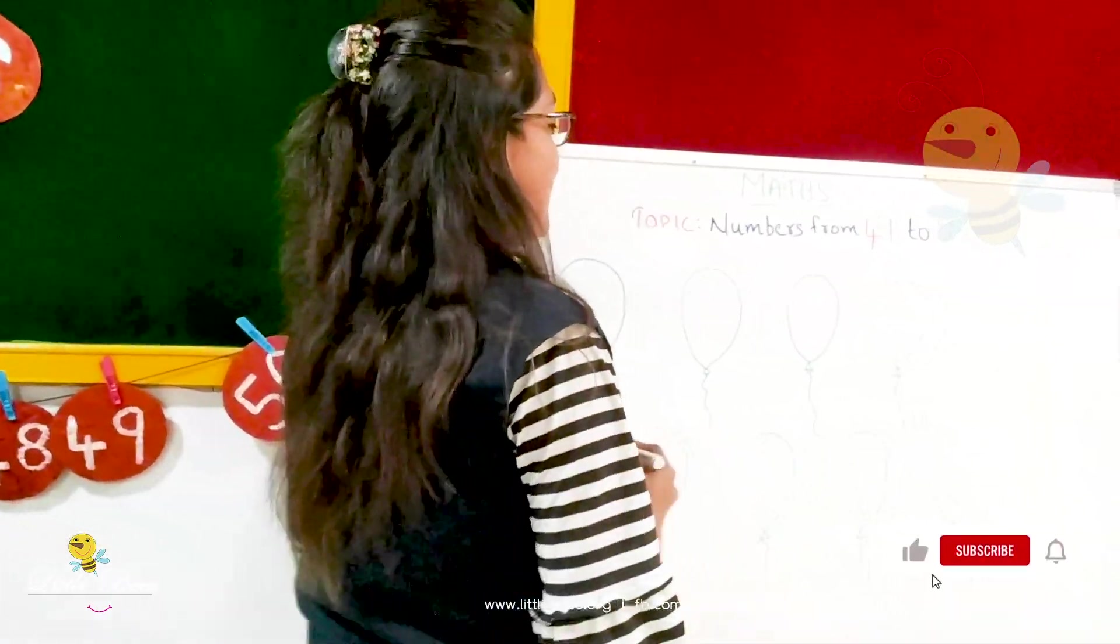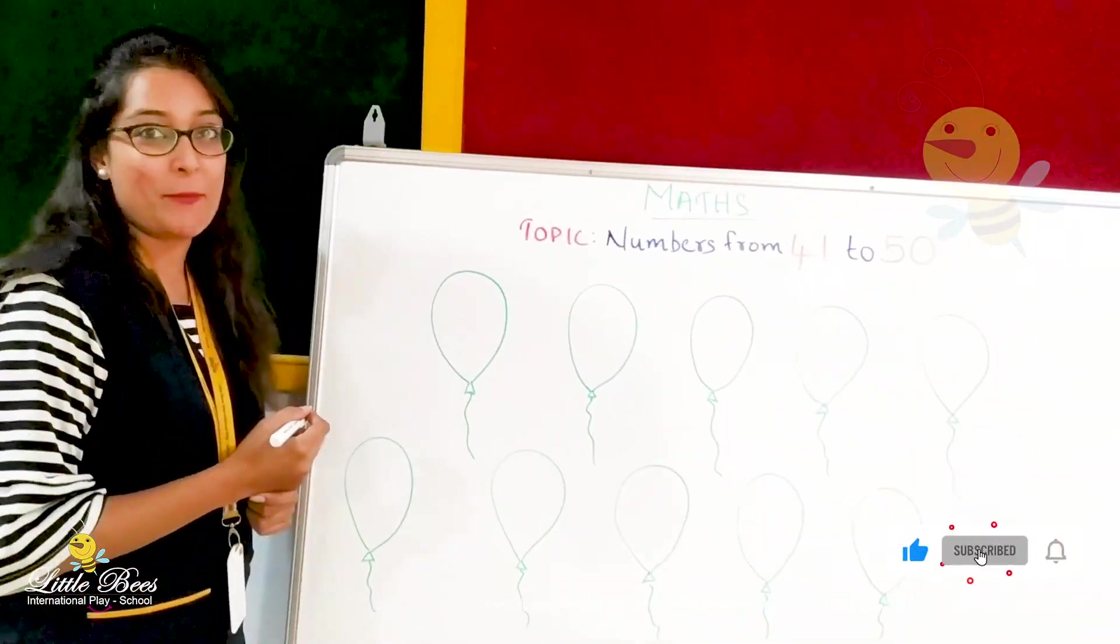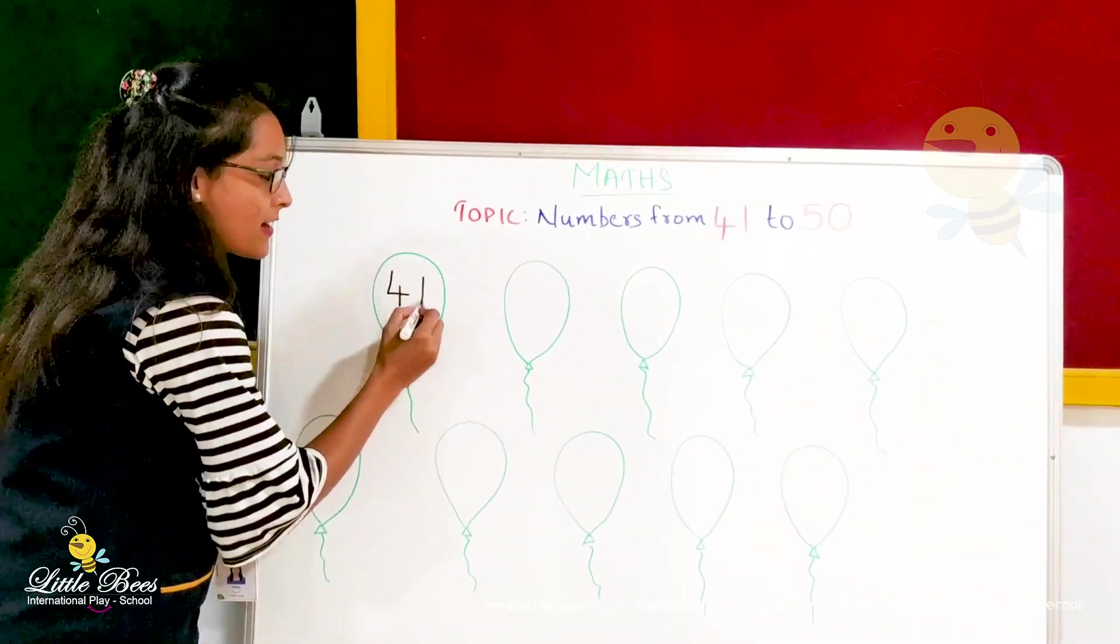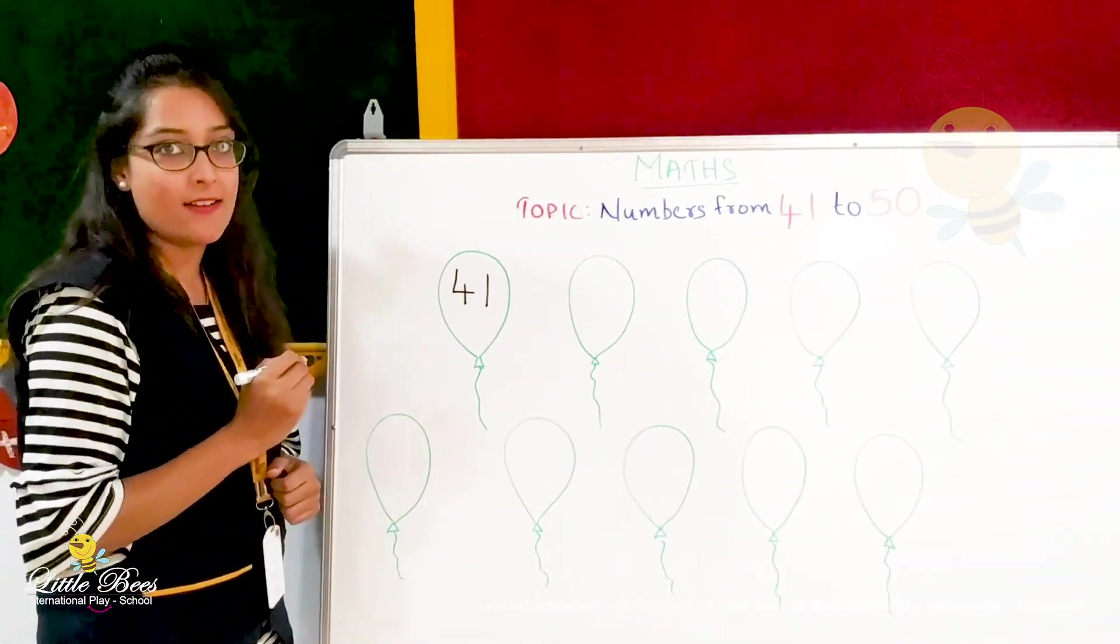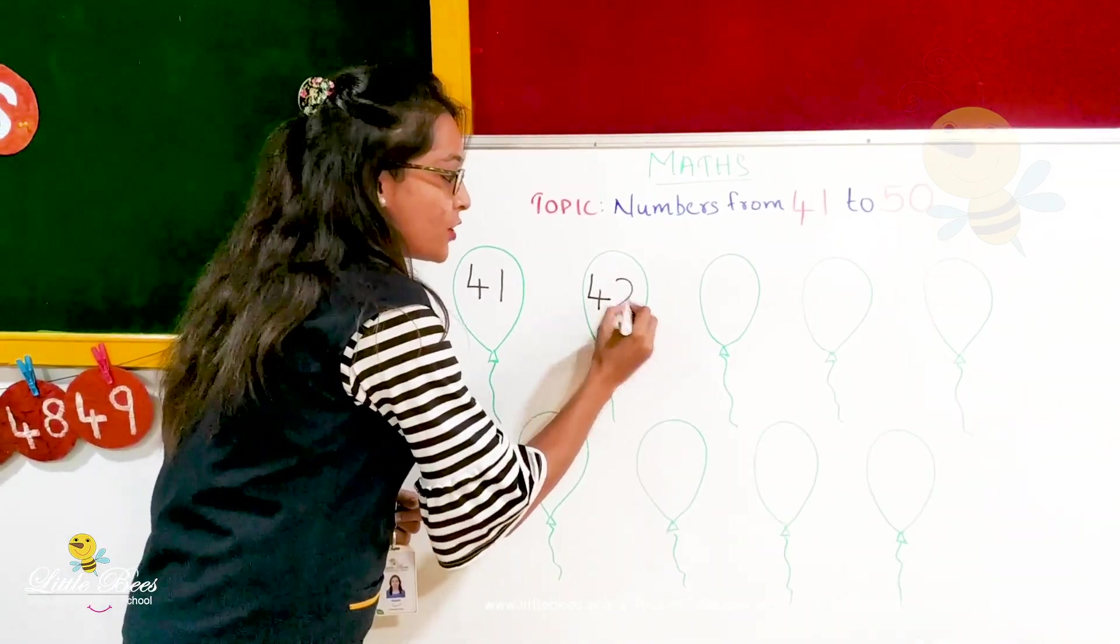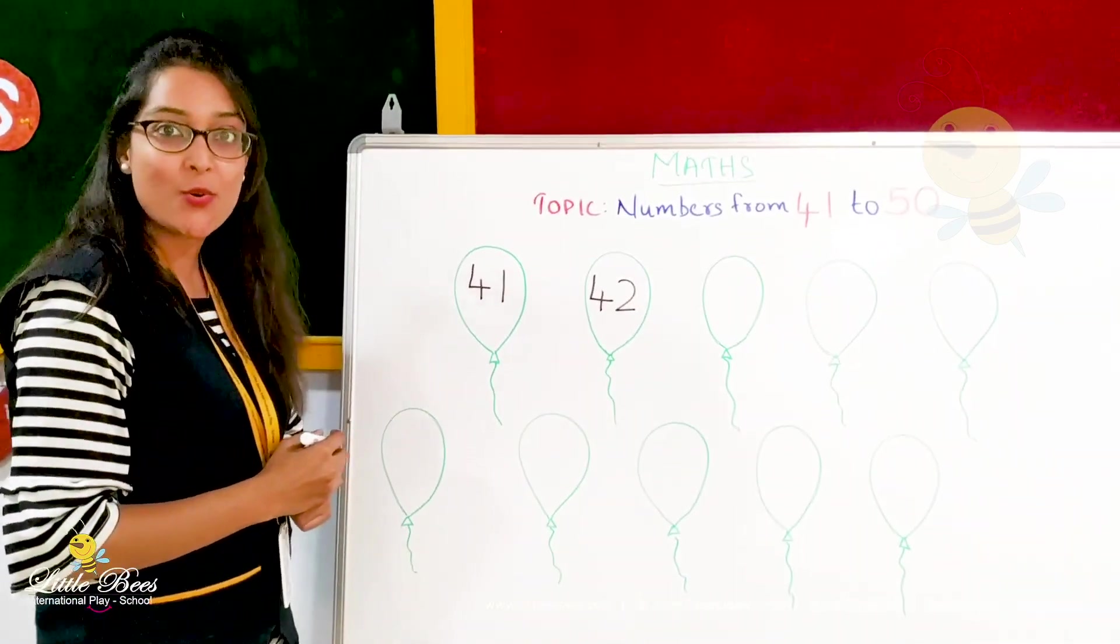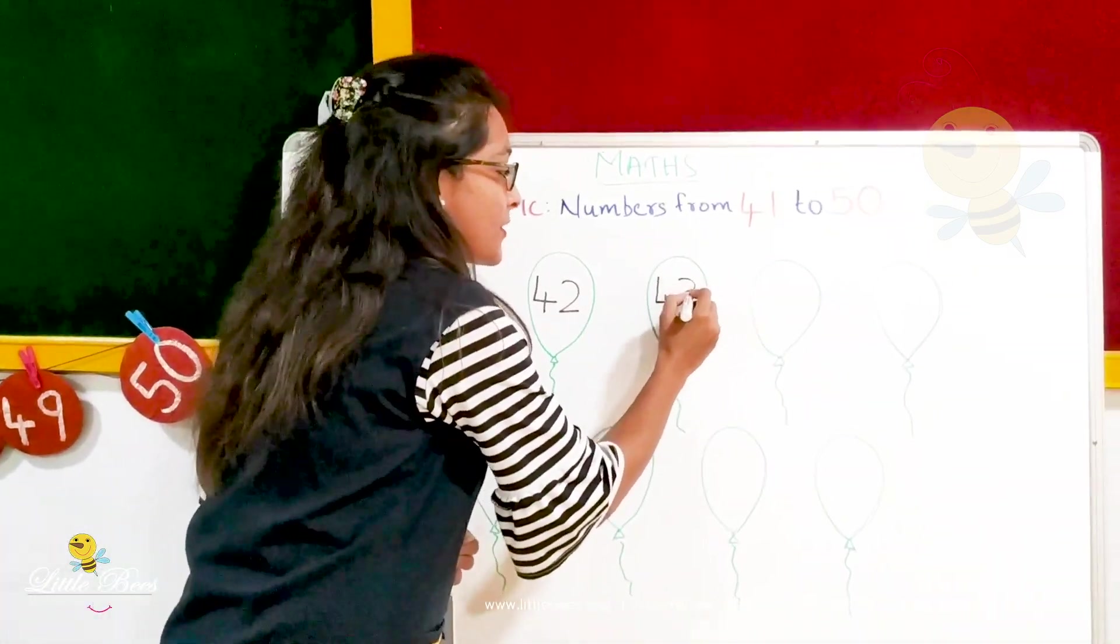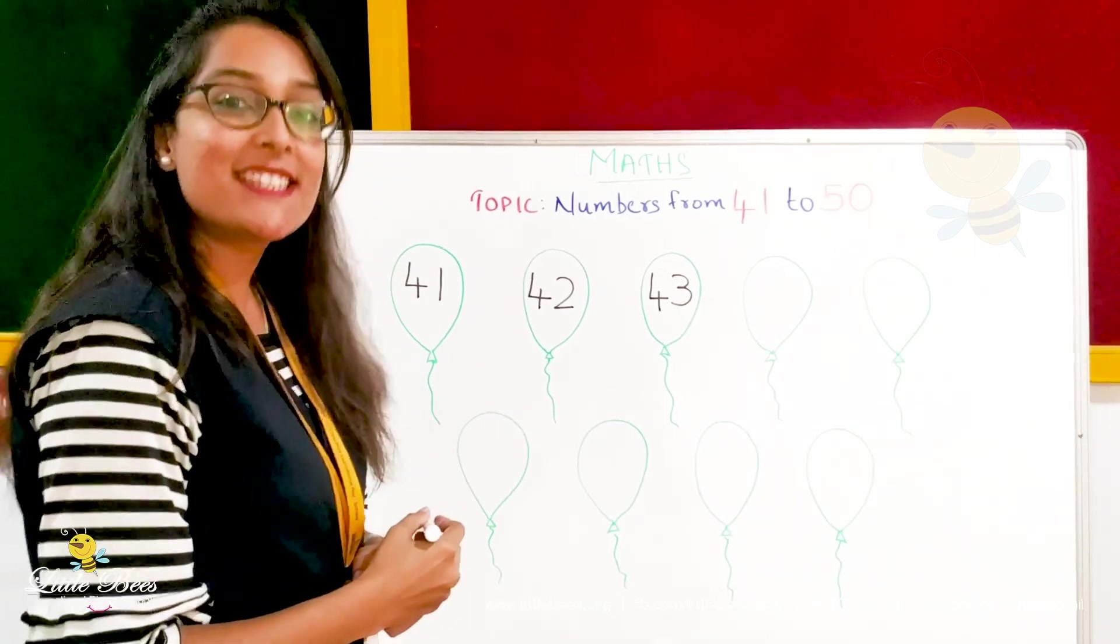Ready? So the first number is 41. 41. 42. 42. 43. 43.